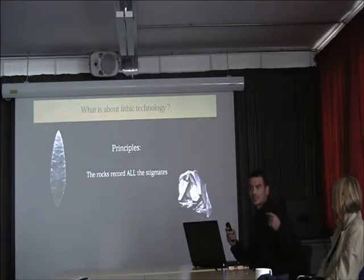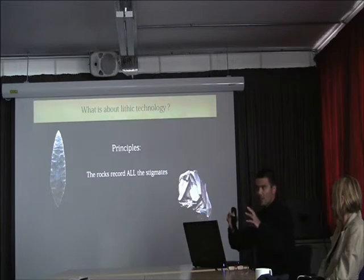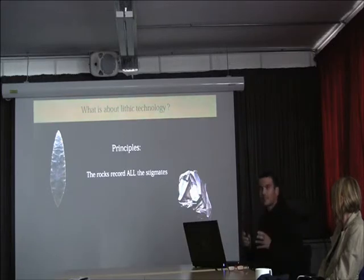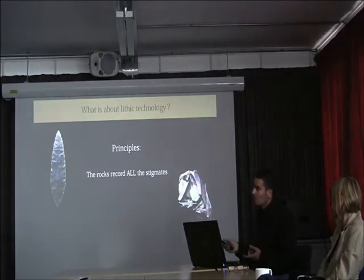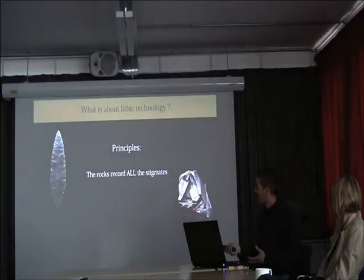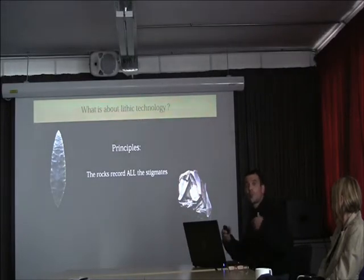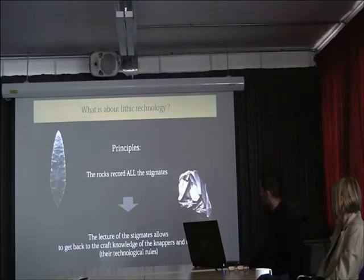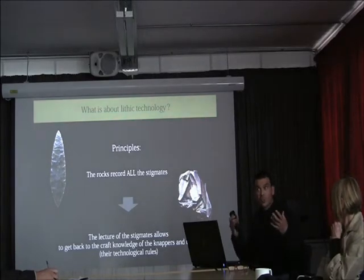The reason we can go back to this system is that rocks record all the stigmas. When you have a piece, you know at which stage it entered the reduction sequence — you have an idea of the geometry. Optimally, you have refitting: a 3D block that tells you exactly when the piece was detached, what its role was. Even without refitting, you can characterize the rocks to understand where they came from, the distances involved, and how the tools were used and for which purpose. Reading all the stigmas gives you quite good knowledge — actually the craft knowledge — of the knappers and the users, and so you go back to the technological rules of these people.